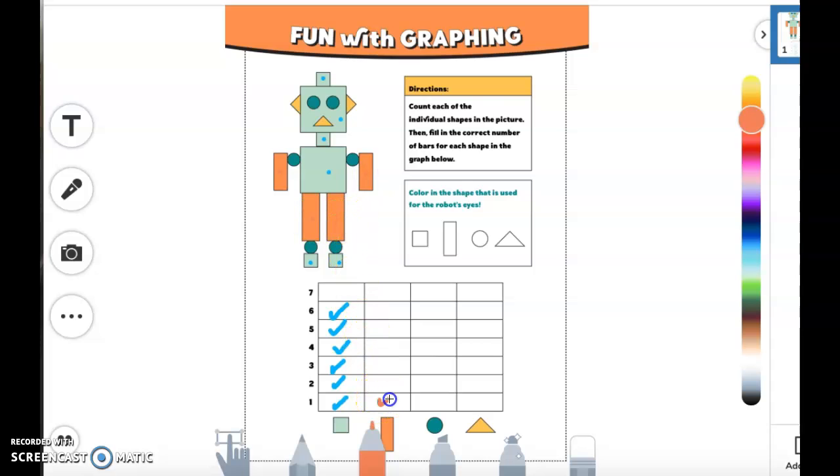You're going to go through and do this for the remaining two shapes to complete your graph. At the end, you're going to answer the question in the box here. Color in the shape that is used for the robot's eyes. So you'll color in the shape that they used for the robot's eyes.